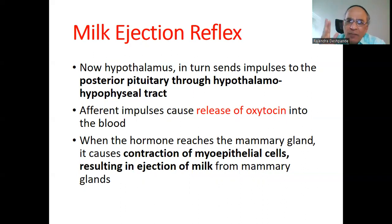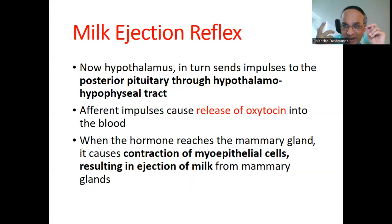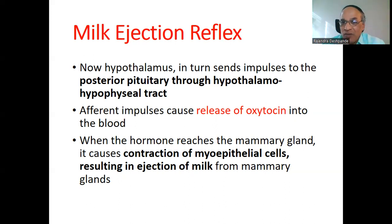Seven hormones are secreted from the anterior pituitary — like growth hormone, FSH, LH, TSH. From the posterior pituitary, there are only two hormones: one is oxytocin, and the second is ADH — antidiuretic hormone, also called vasopressin. At this moment we are focused on oxytocin, but remember that the posterior pituitary secretes only these two hormones.